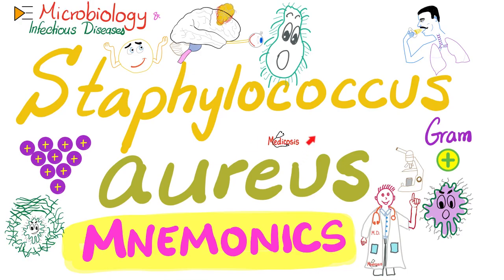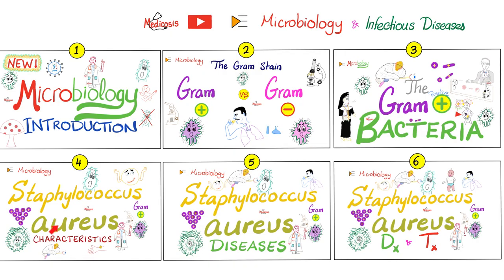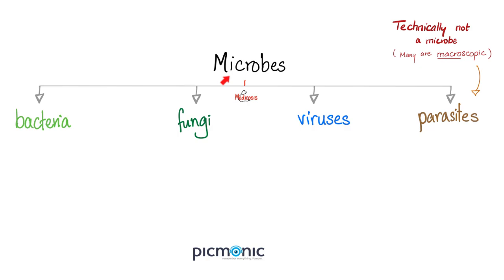Hey guys, it's Medicosis Perfectionatus, where medicine makes perfect sense. Let's resume our Microbiology and Infectious Diseases playlist. In the previous video, we talked about how to diagnose and treat Staph aureus infections. Today, we have some great mnemonics. In video number four, we talked about the characteristics of Staph aureus. Video number five was about diseases of Staph aureus. Video six was how to diagnose and treat Staph aureus. Today is video seven: mnemonics on Staph aureus.